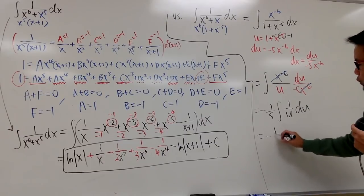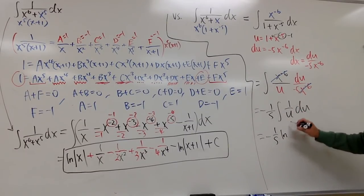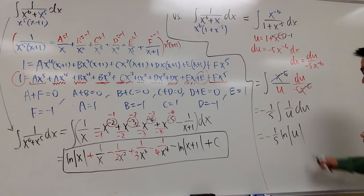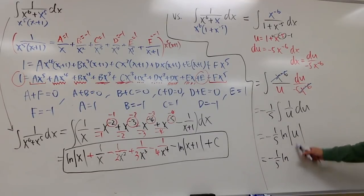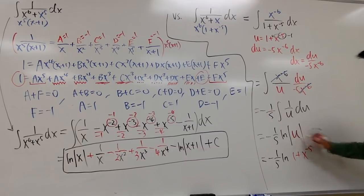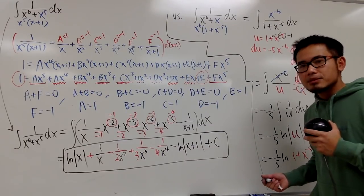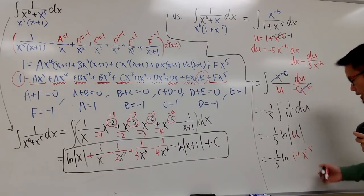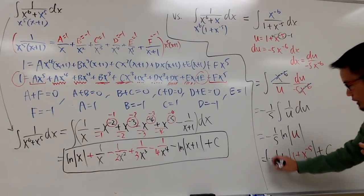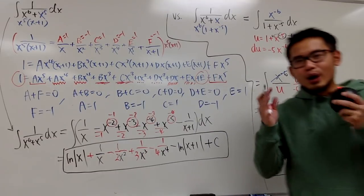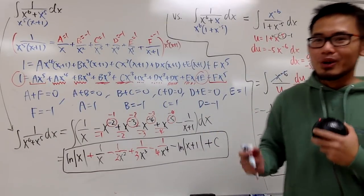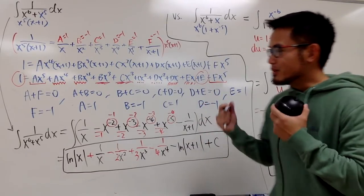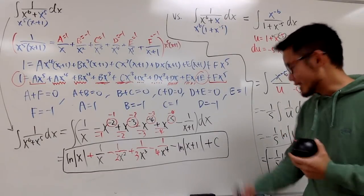This gives us negative 1/5 times ln|u|. And since u is 1 plus x to the negative 5, we substitute back: negative 1/5 · ln|1 + x to the negative 5| plus C. And this is it! Hopefully you guys like these integrals and especially the idea of coming up with your own integrals. If you're a teacher or a student, you can try to do these kinds of things to really enhance and improve your integration skills. That's it.